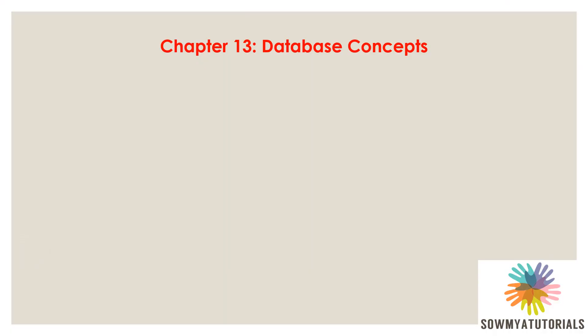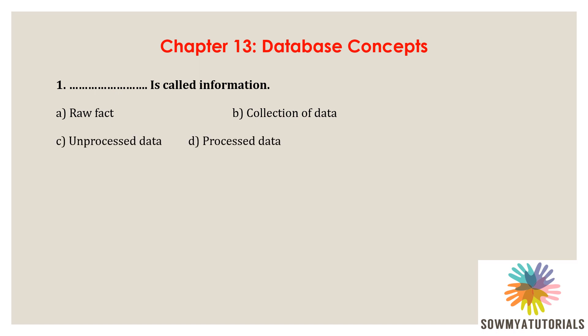Now let us discuss some multiple choice questions from Chapter: Database Concept. The first question is: dash is called information. Options are A) raw facts, B) collection of data, C) unprocessed data, D) processed data. The correct option is D — processed data is called information.